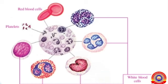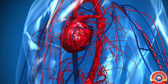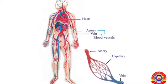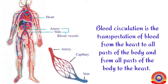How does blood reach all parts of the body? Observe this picture. Blood circulation is the transportation of blood from the heart to all parts of the body and from all parts of the body to the heart. What are the parts included in the blood circulatory system?